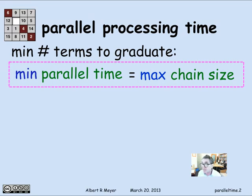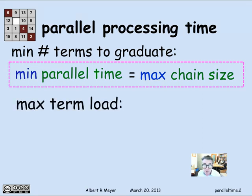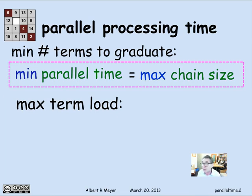We saw that example with the course prerequisites where we had 5. And in general, this is the theorem: minimum parallel time is exactly equal to maximum chain size for chains in the graph that constrains the order in which tasks can be completed.